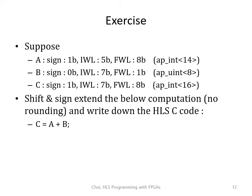Let's solve an exercise on what we just did. Suppose we are adding two variables: variable A has 1 sign bit, IWL 5 bits, and FWL 8 bits; variable B has no sign bit, IWL 7 bits, and FWL 1 bit; and C has 1 sign bit, IWL 7 bits, and FWL 8 bits. Please shift and sign extend this computation and write down the HLS C code. Please pause now, and when you've written down your answer, go to the next slide.